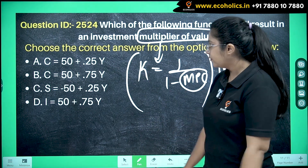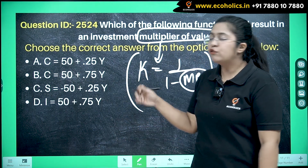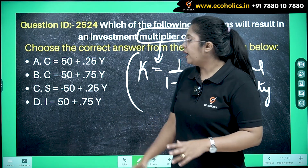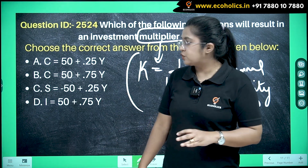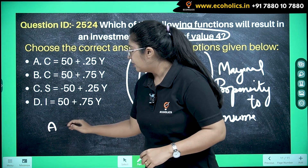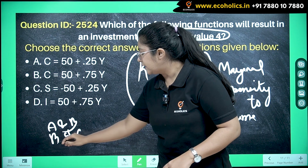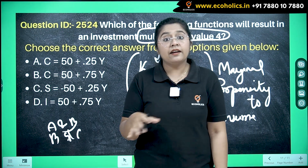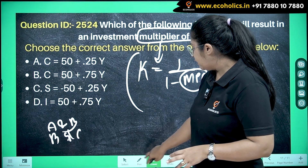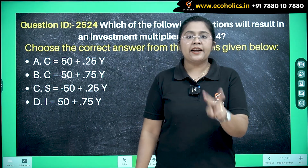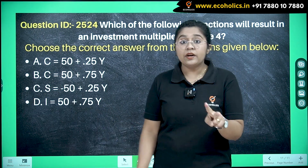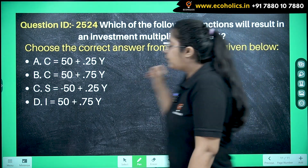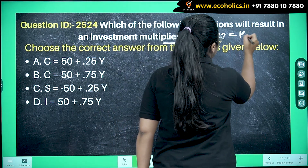They have given four options, and we have to choose the correct ones. The options were structured as: A and B only, B and C only, C and D only — that type. So there were two correct options for this answer. The only thing to remember is that k equals 4, as given in the question.